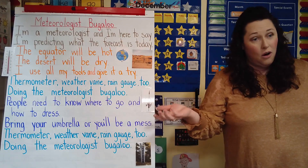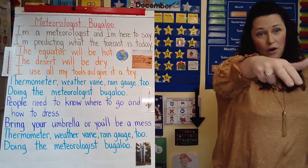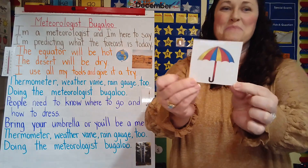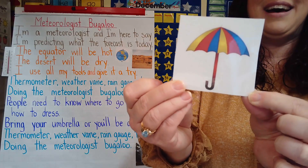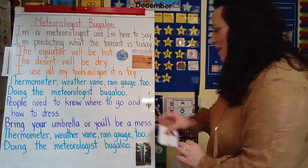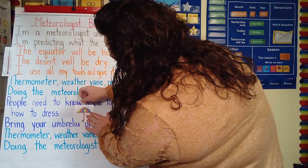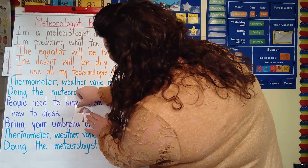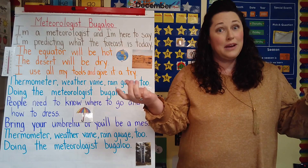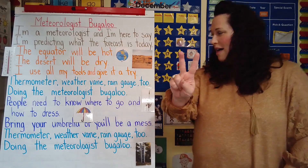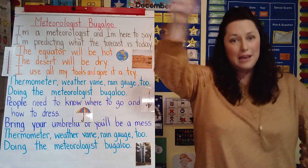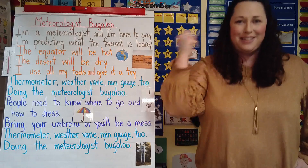People need to know where to go and how to dress, like we're putting on our clothes. And then bring your umbrella — I'm going to put umbrella right up here too. Bring your umbrella or you'll be a mess. And then we do it again: thermometer, weather vane, rain gauge too. Doing the meteorologist boogaloo.